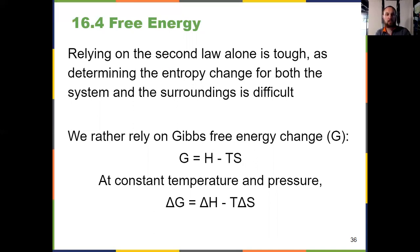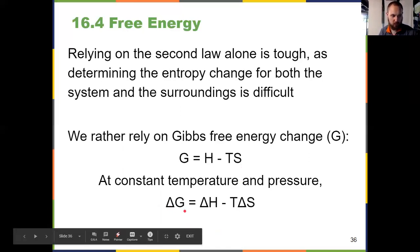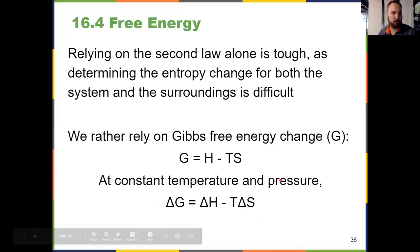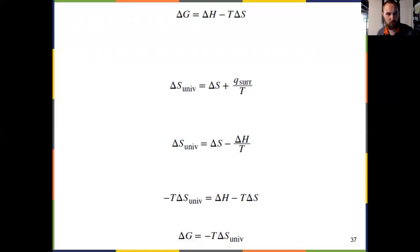In section 16.4 we have a better tool to predict the spontaneity of a reaction: Gibbs free energy, represented by the variable G. Gibbs free energy equals H (enthalpy) minus T (Kelvin temperature) multiplied by S (entropy). At constant temperature and pressure, the change is: ΔG = ΔH − TΔS. There is no ΔT here because temperature is constant. This refers specifically to the system, so we don't have to think about the universe.